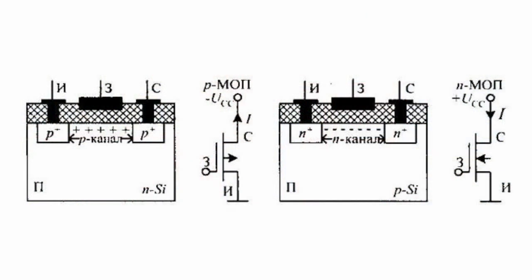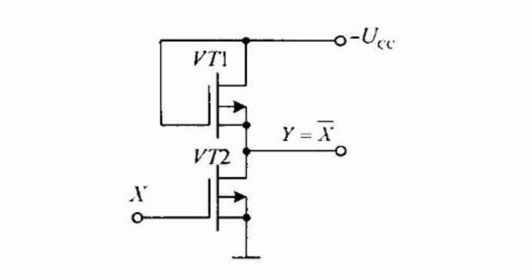MOS transistors have the metal insulator semiconductor structure and are generally referred to as MIS transistors. Since the insulator is based on silicon oxide, the name MOS transistor can also be used. In circuits of NOT devices built on RMOS transistors,